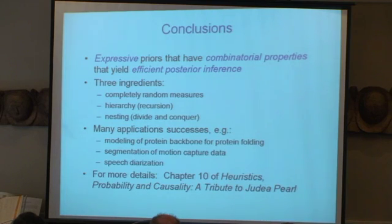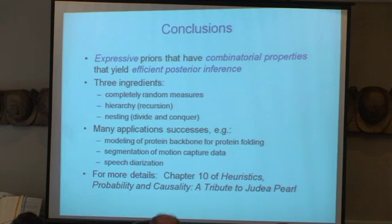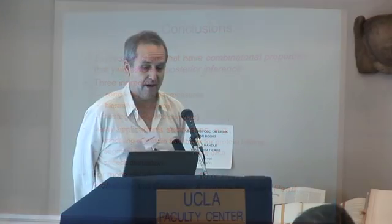Let me just summarize. This was kind of throwing a bunch of ideas out there, but there are a few themes. The main one is that these priors I've discussed are very expressive. They have combinatorial properties — they fold up into these restaurants, which yield efficient posterior inference. There are three ingredients that lie behind this. We've had a whole string of applications, and you can get state-of-the-art results in a number of interesting domains using these ideas.